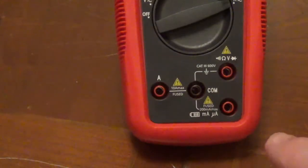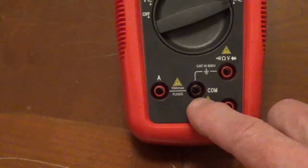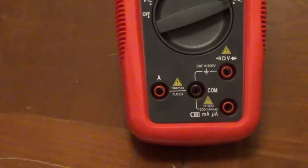Your black probe, the negative probe, would go into the COM port. You have three input ports for your red probe, which is your positive probe.